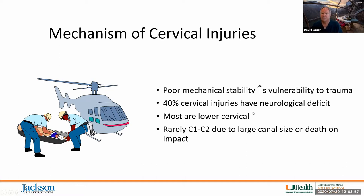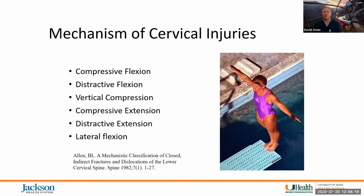Most cervical injuries are lower cervical, and rarely do we see C1 and C2 injuries — partly because of the large canal size, and partly because significant disruption of the cord at that level results in death almost immediately, as it cuts off the respiratory centers. The mechanisms of cervical injuries play out at the thoracic and lumbar region as well, so once you learn these for cervical injury, you'll know them for thoracic and lumbar disruptions too.